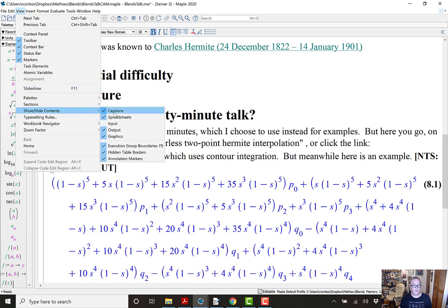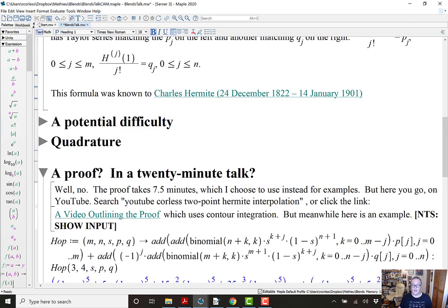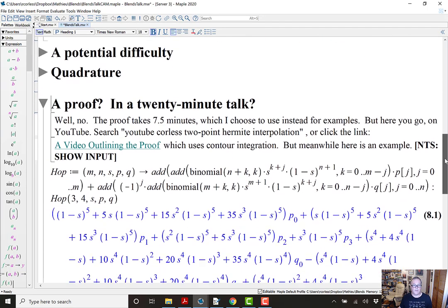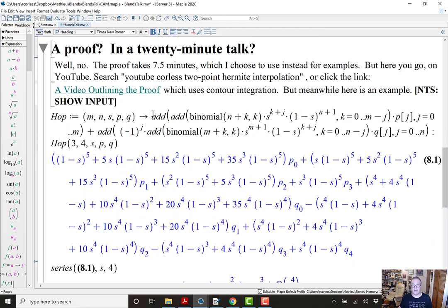I'm going to turn the input on now. Here I have an operator form of that double sum up there. Instead of using sum, I use add. So, this is going to expect some numerical values for m and n. So, it's going to execute these additions. But, otherwise, it's the same thing. So, here is when we choose m equals 3 and n equals 4. So, I've got four coefficients known at the left and five coefficients known at the right. And, I'm going to say my data is actually just symbols, p0 through p3 and q0 through q4.